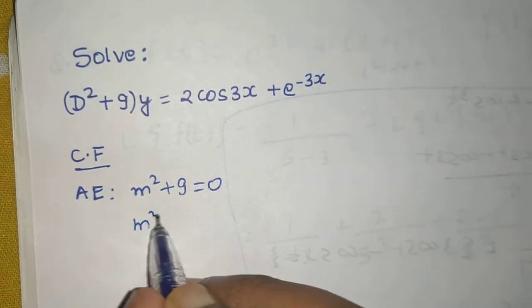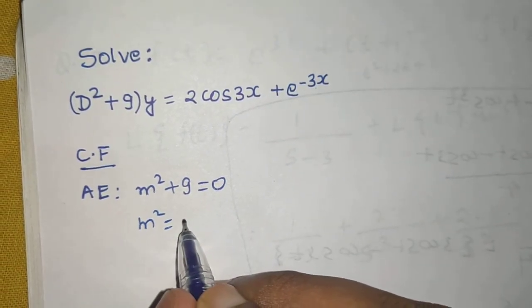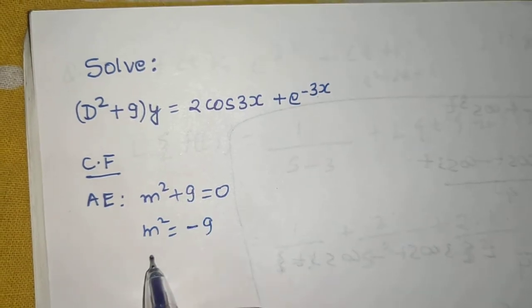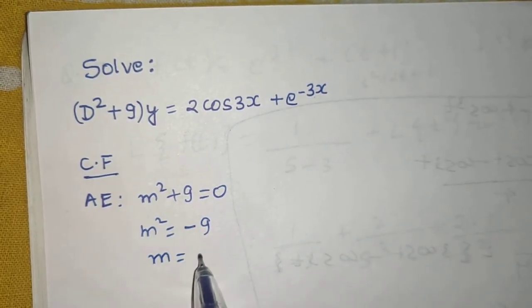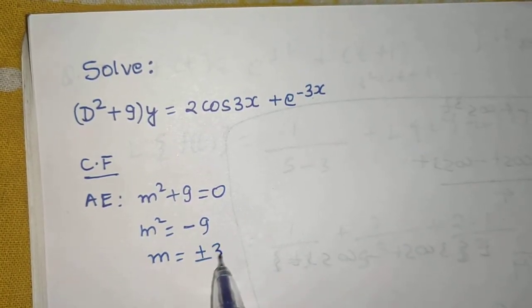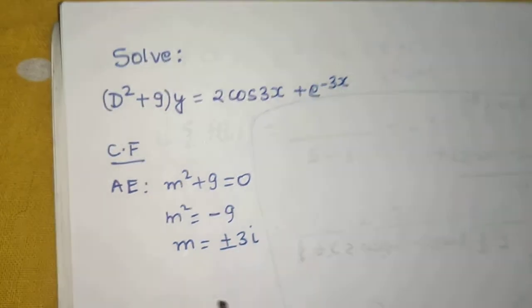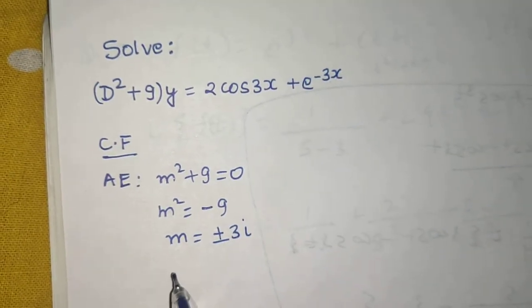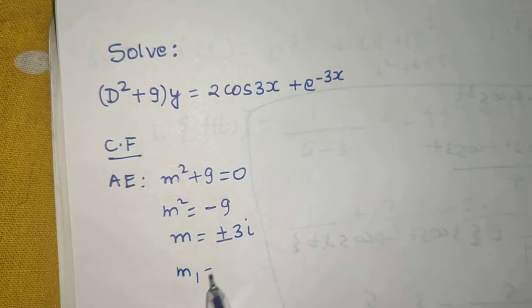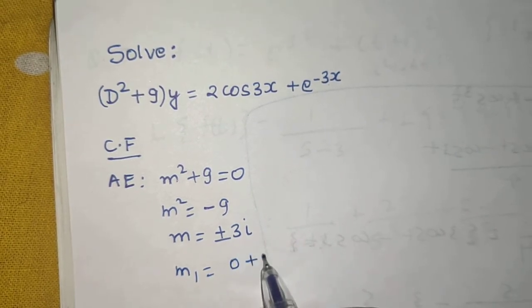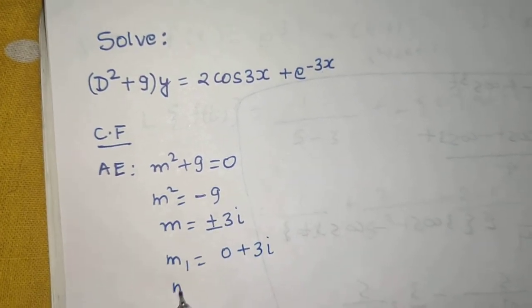So m squared is minus 9. So m will come out to be plus minus 3i. So we can write this as m₁ equals 0 plus 3i and m₂ as 0 minus 3i.